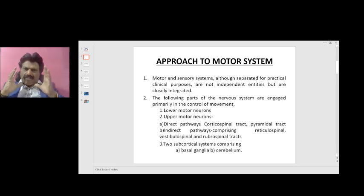The following parts of the nervous system are engaged primarily in the control of movement: the lower motor neurons and the upper motor neurons, the direct pathways including corticospinal tract or pyramidal tract, and the indirect pathways comprising reticulospinal tract, vestibulospinal tract, and rubrospinal tracts. There are two subcortical systems comprising basal ganglia and cerebellum.